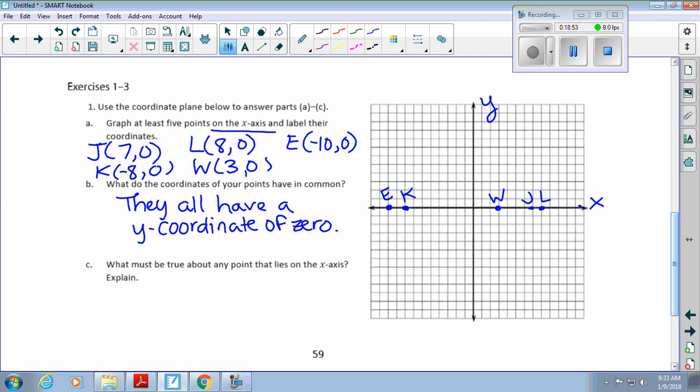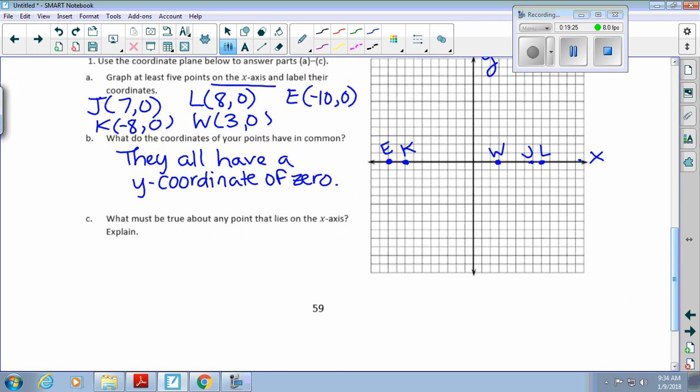Some students say, well, it's on the x-axis, the x-coordinate should be zero. Think about it. You are moving right and left, so you're going to need a number for an x-coordinate bigger than zero or less than zero, but not zero. And then you're not moving up or down. Therefore, that is why it's your y-coordinate that is zero because these all just stayed put right on that x-axis. What must be true about any point that lies on the x-axis? All of their y-coordinates would have to be zero.